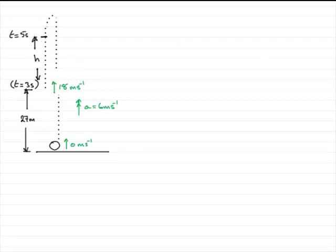So during this stage, acceleration is due to gravity because it's not being powered by the motor and that acts downwards. So we've got g, which is 9.8 meters per second per second.